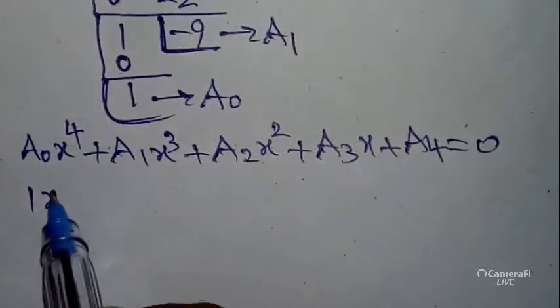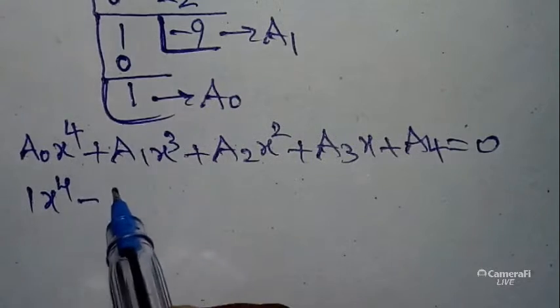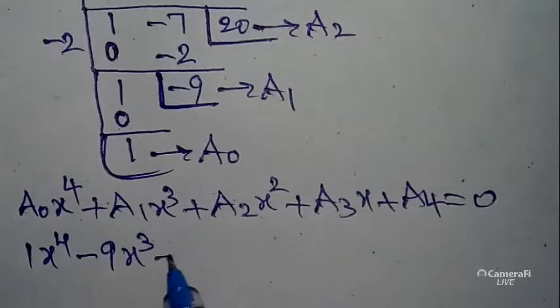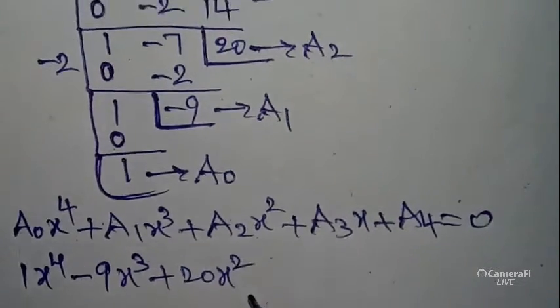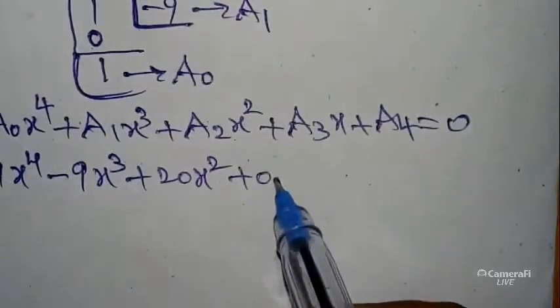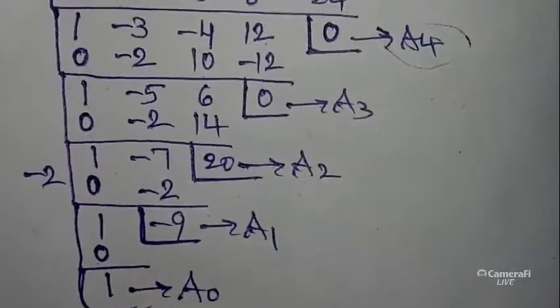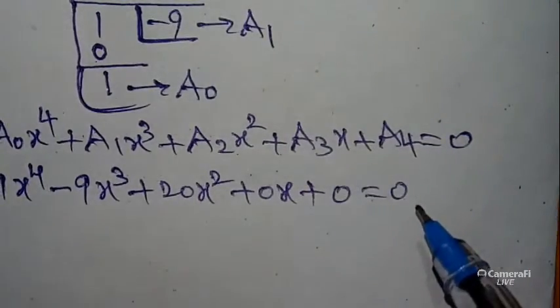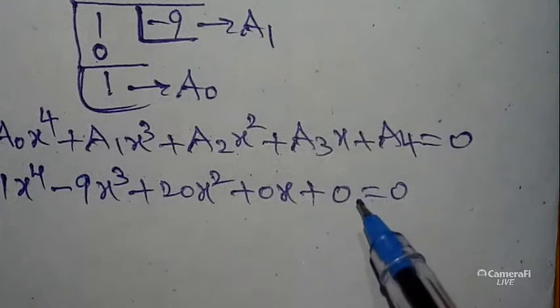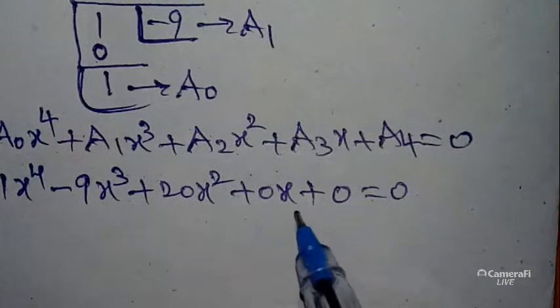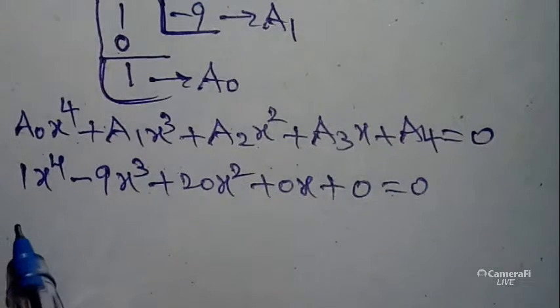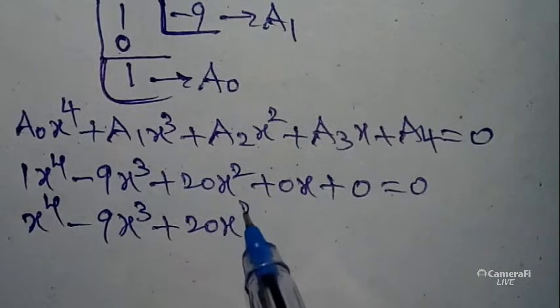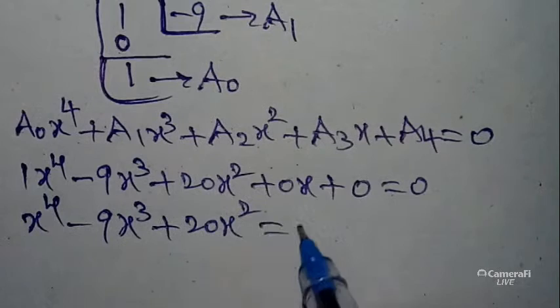a0 value is 1 × x^4 plus a1 value is -9x^3, next a2 value is 20x^2 plus a3 value 0 × x plus a4 value 0, so you can write equals to 0. 0 × x plus 0 equals 0. So this can be written as x^4 - 9x^3 + 20x^2 = 0 is our required solution.